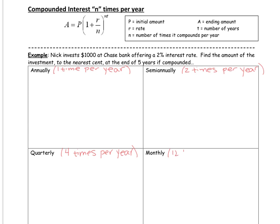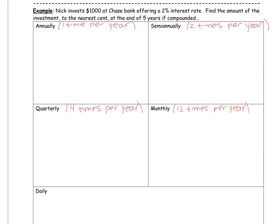Monthly is 12 times per year because there are 12 months in a year. And daily is 365 days or 365 times per year. We don't include leap years for those that are wondering.